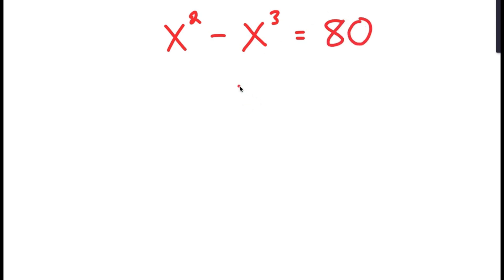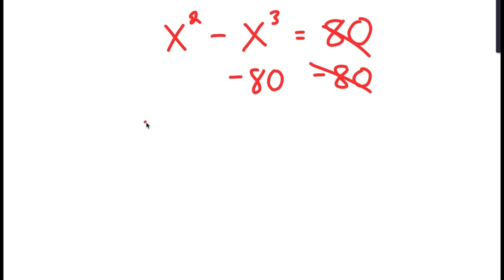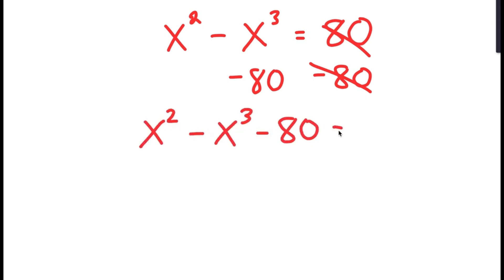To solve this equation, I'm going to first start by subtracting 80 on both sides. So now I get x squared minus x cubed minus 80 is equal to 0.